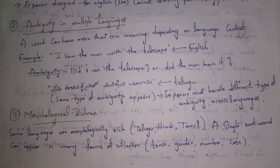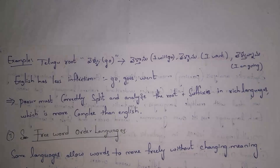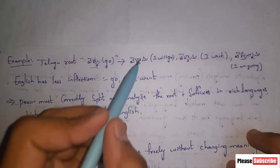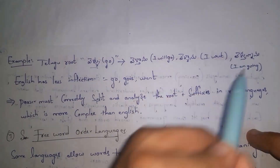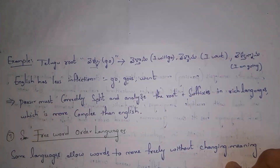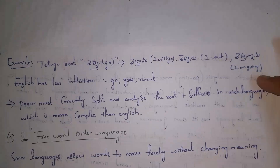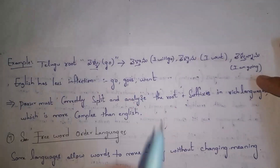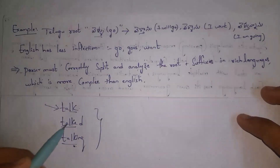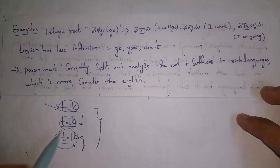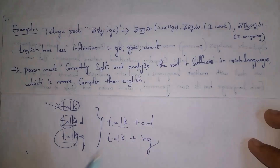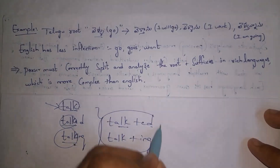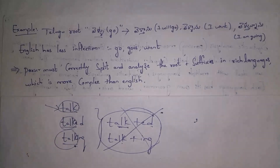The third issue is morphological richness. Some languages are morphologically rich, like Telugu and Tamil, where a single root word can appear in many inflected forms. For example, in Telugu, the root word 'vellu' (meaning 'go') appears in various forms like 'veltanu', 'villanu', and 'veltunanu'. English is not morphologically rich in comparison — for example, 'go', 'goes', and 'went' do not share a repeated root form. In such situations, a parser cannot split root plus suffixes to determine the meaning of the sentence.